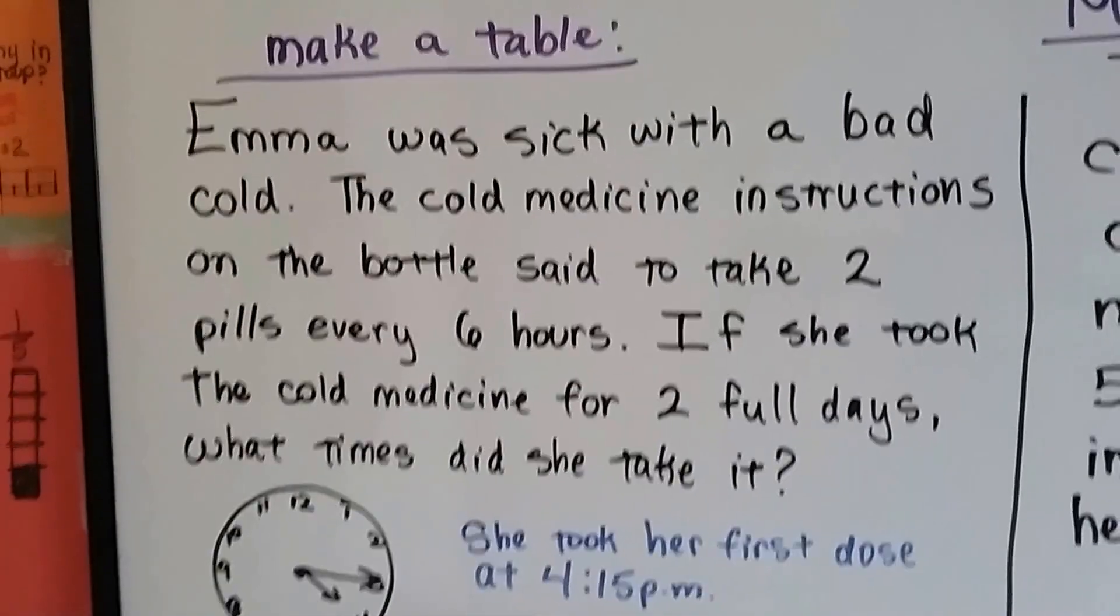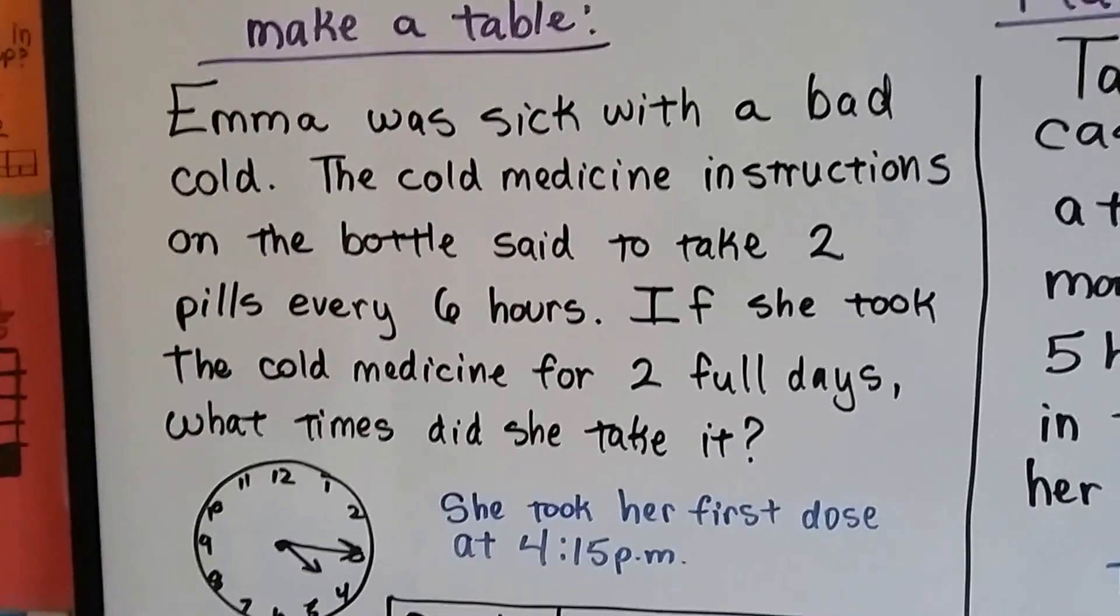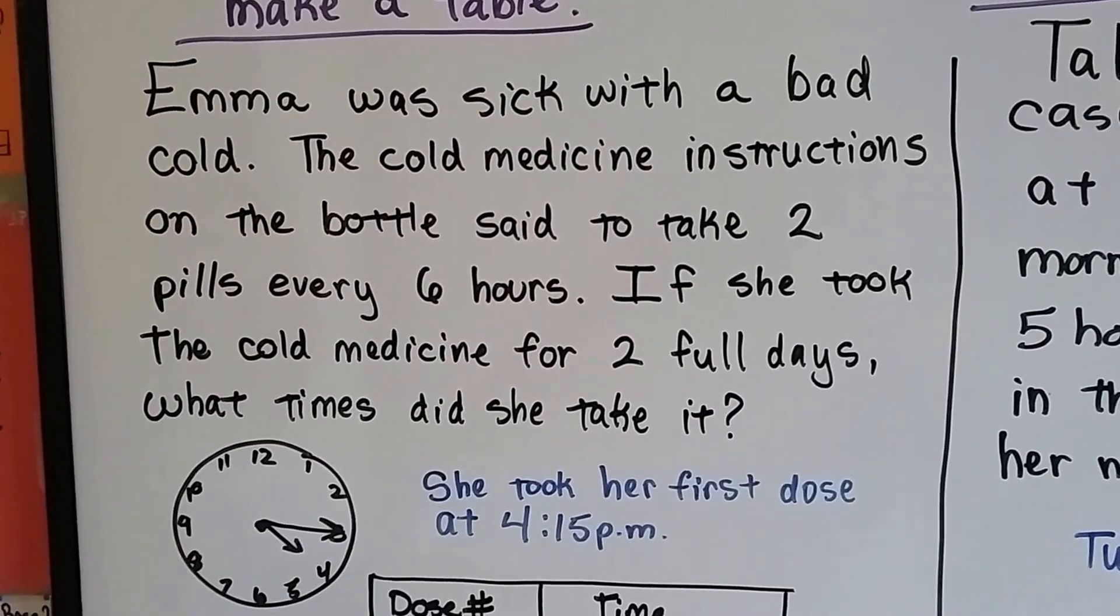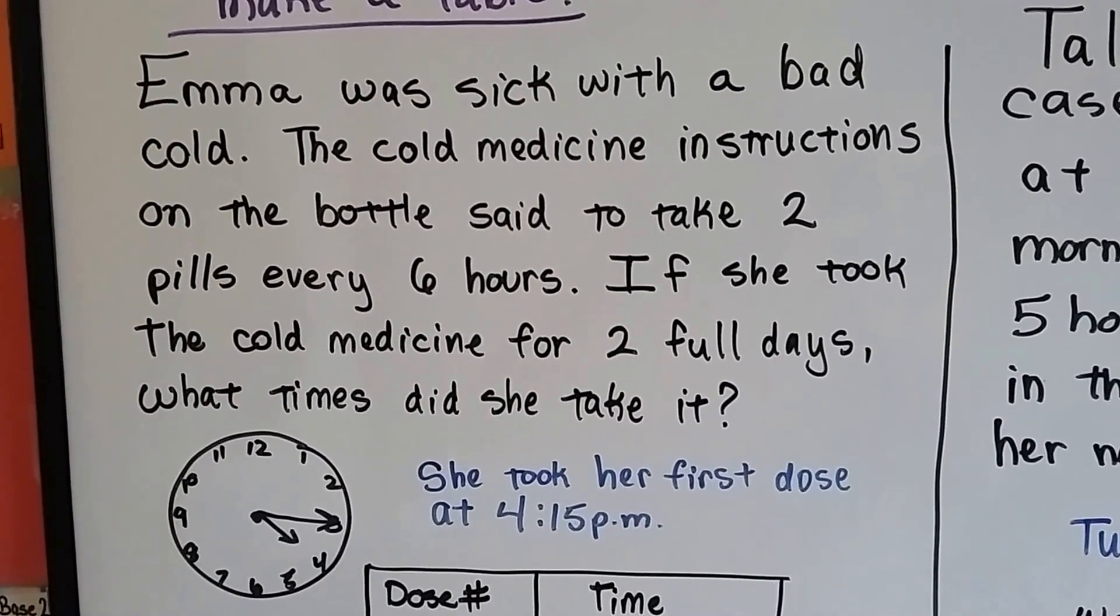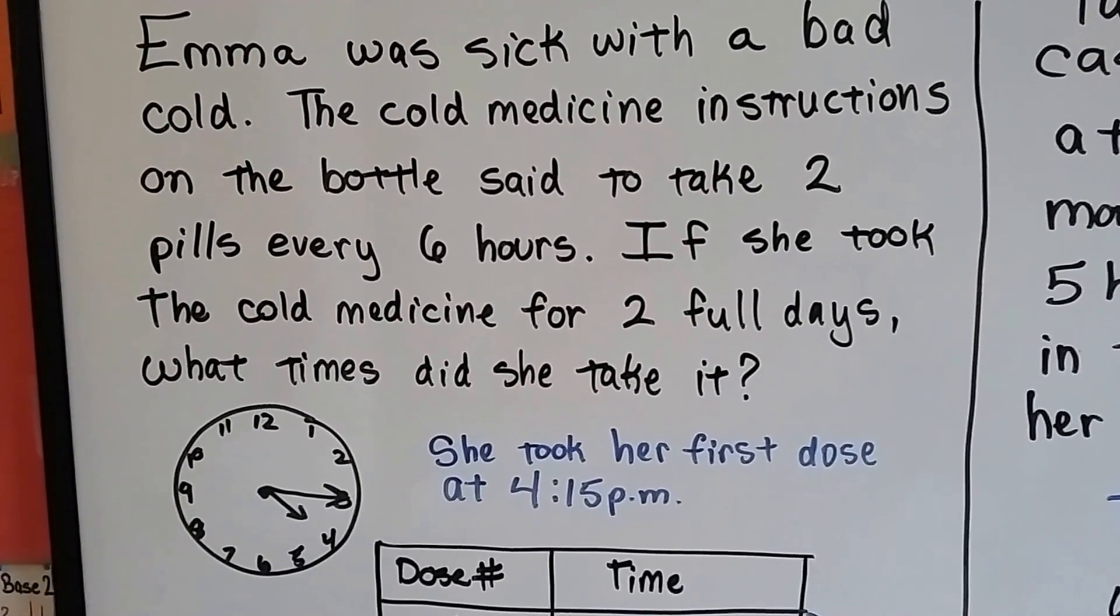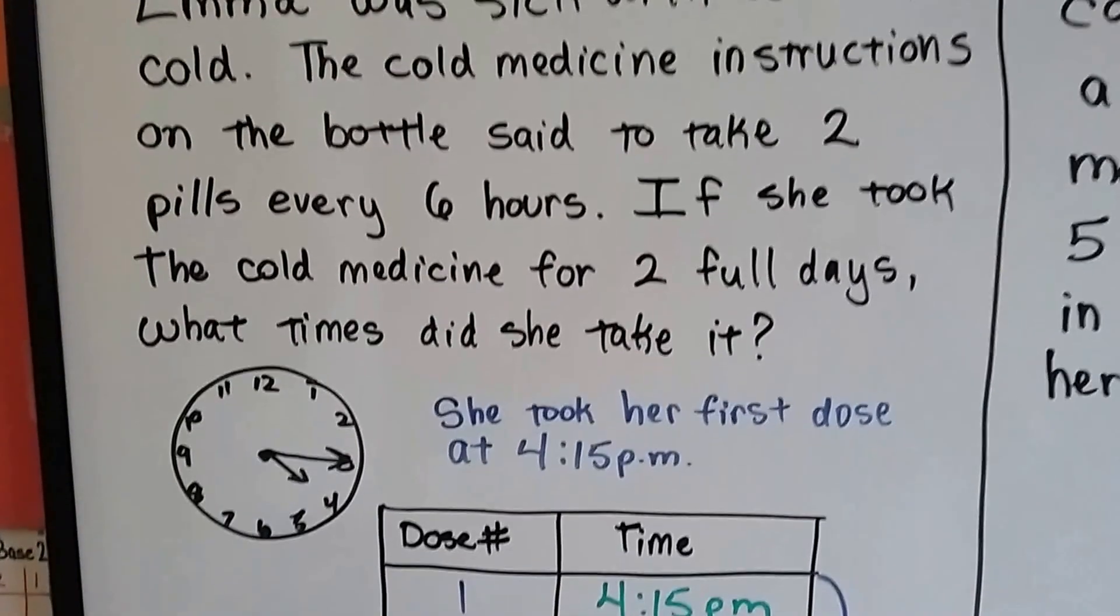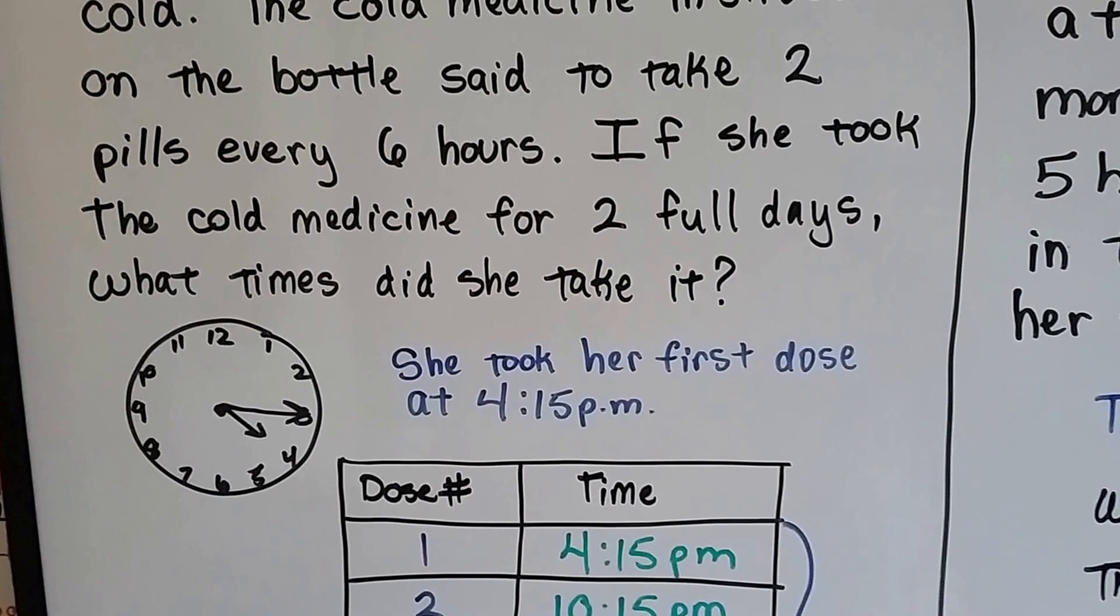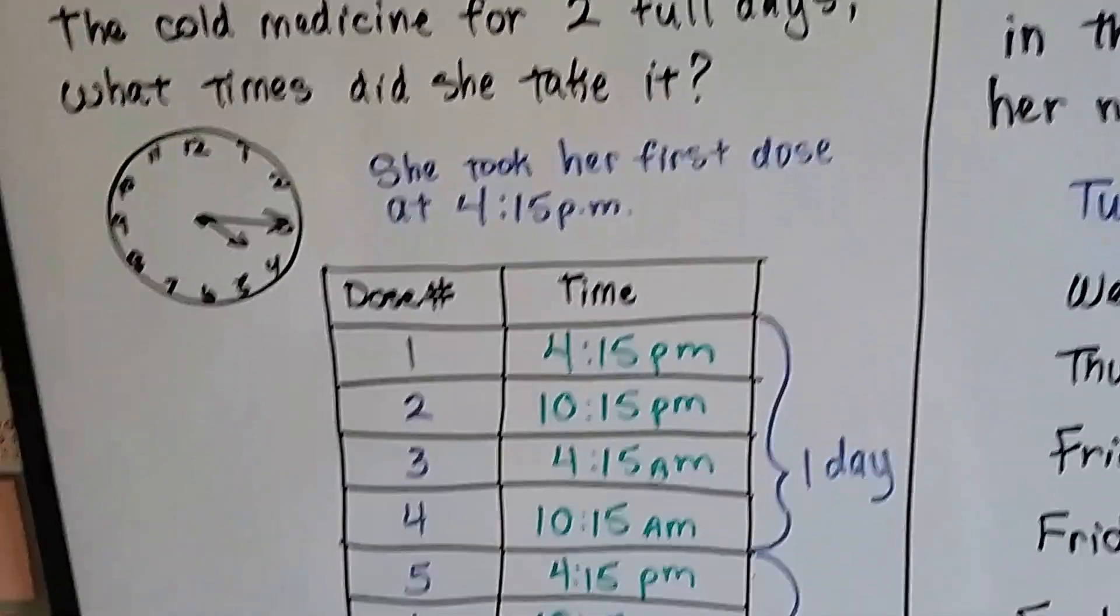It's one of the hardest things to figure out is elapsed time when there's a lot of time that went by. The easiest way to do it is to make a table. Emma was sick with a bad cold. The cold medicine instructions on the bottle said to take two pills every six hours. If she took the cold medicine for two full days, what times did she take it? She took her first dose at 4:15 p.m. See, it's 4:15 p.m. on the clock. By making a table...